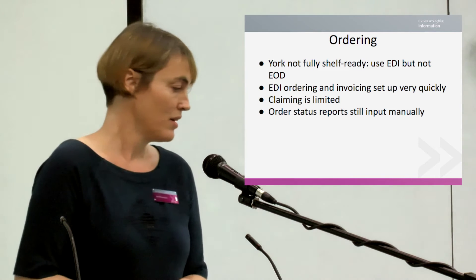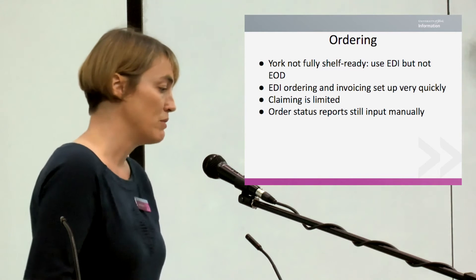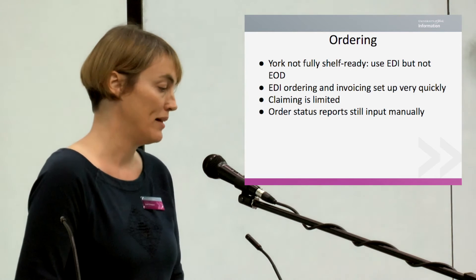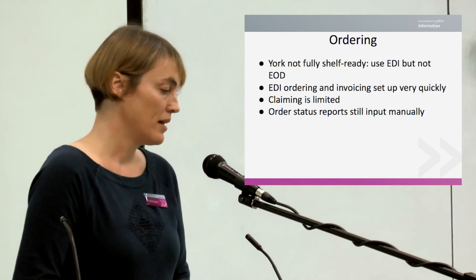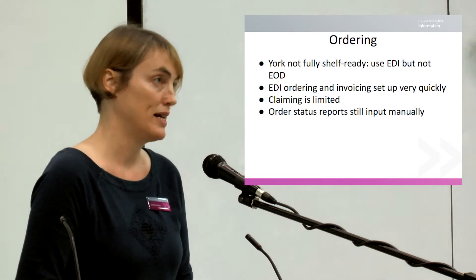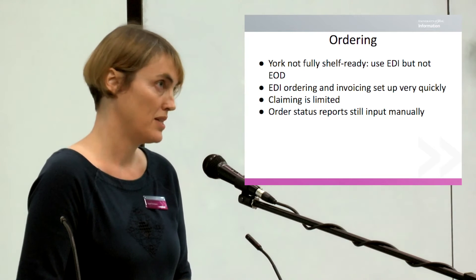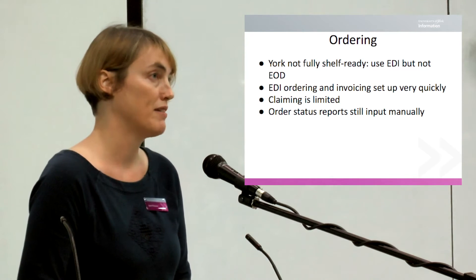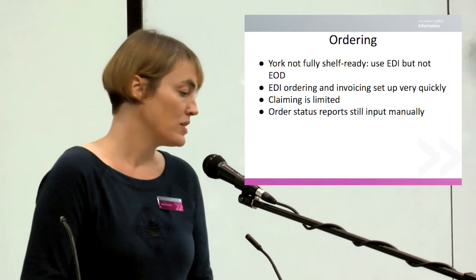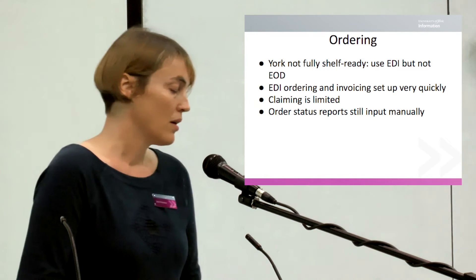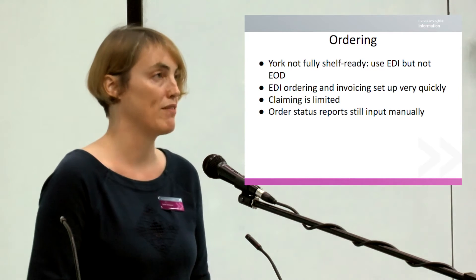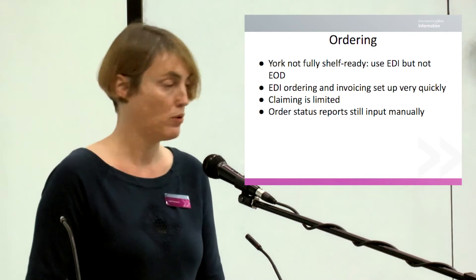Claiming is quite limited — you can send a claim once for a one-off or continuous order, but Alma doesn't really handle follow-up claiming well after that. We still need to input order status reports from suppliers manually. In Aleph we had set that up as an EDI process, but it isn't available in Alma yet, so we've had to revert to manually inputting things like 'not yet published' or 'out of print' reports from suppliers into our order records.